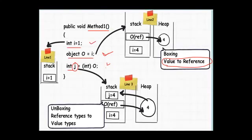The third line of code demonstrates unboxing. In unboxing, we set the reference type to a value type. Here we are moving the o value to a value type, which is the integer j. Boxing means you set a value type to a reference type, and unboxing means you set a reference type to a value type. The best way to remember is VR: Value to Reference is boxing, Reference to Value is unboxing.